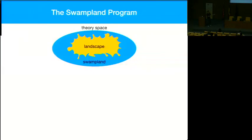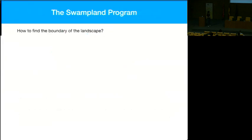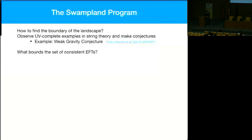About the Swampland program: we imagine that we have some theory space, some space of self-consistent low-energy effective theories in which we have this landscape — the subset that is ultraviolet completable in quantum gravity and string theory in particular. So what we ask ourselves is how do we define this boundary between the landscape and the Swampland? Normally in practice we look at examples from the well-defined theory of quantum gravity that string theory gives us.